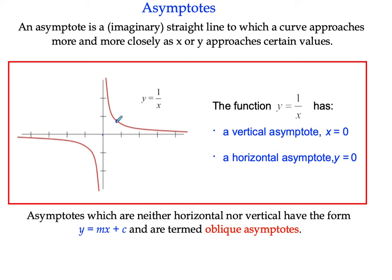(1,1) would be a point on the line. But as x gets very large, if x was 10, then the y coordinate would be 1 tenth.